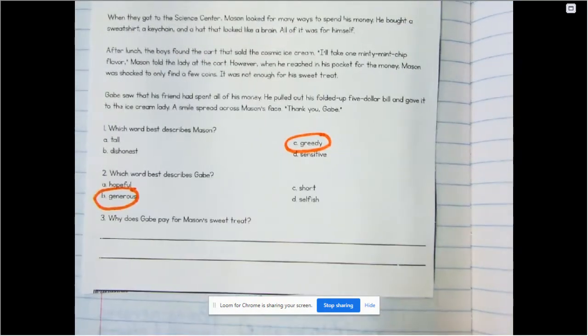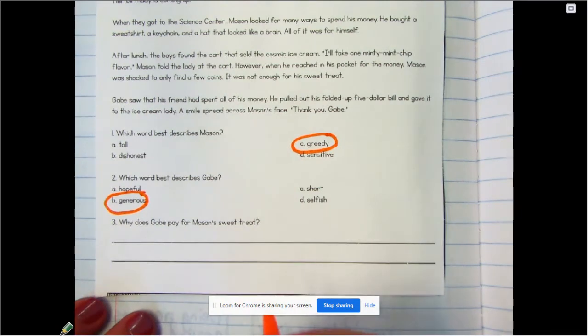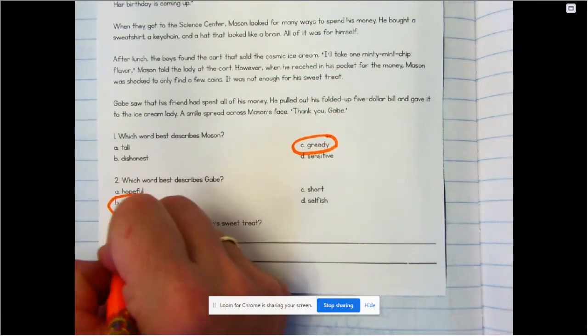Okay, number three: why does Gabe pay for Mason's sweet treat? What do you think? What do you think you can write down your reason? I'm going to write down, I think...